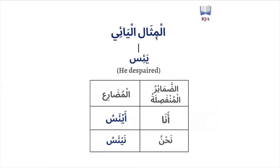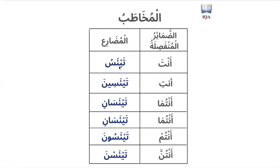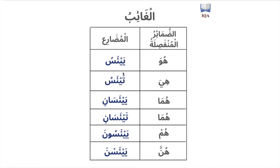For the mithal al-ya'i, the rule we just covered is not applied. The mithal al-ya'i will never lose its ya at the beginning. In terms of how it looks when conjugated in the mudara': ana is ay'asu, nahnu is nay'asu — so 'I am despairing, we are despairing.' Tay'asu — 'you are despairing,' tay'asina, tay'asani, tay'asuna, tay'asna, yay'asu, tay'asu, and so on.